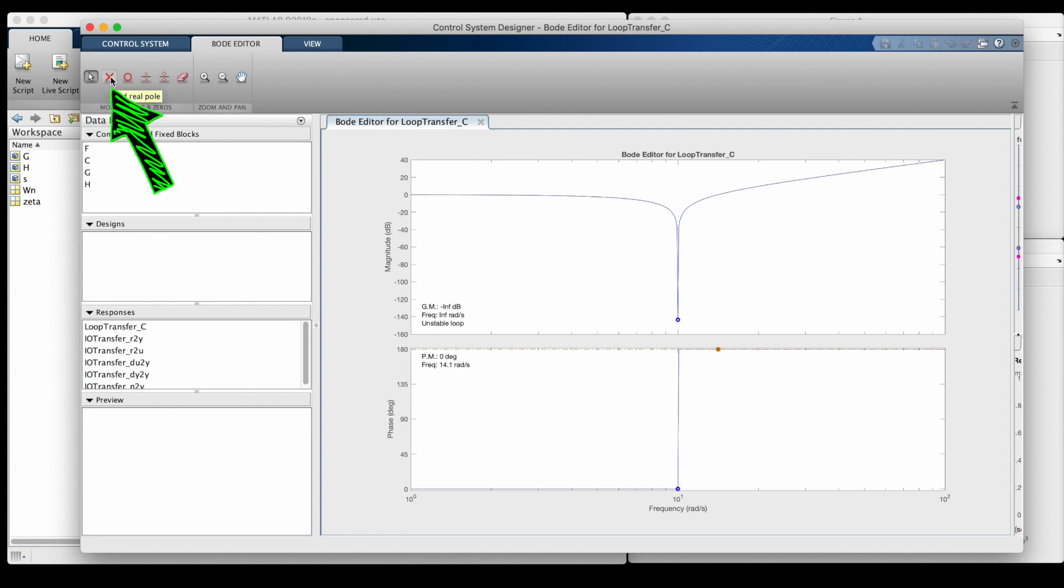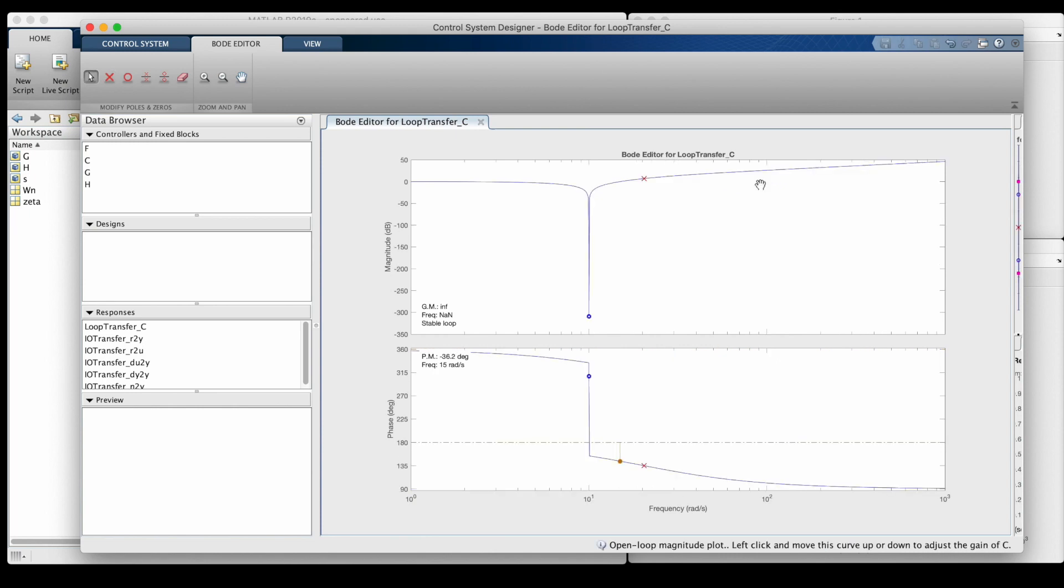I'm going to add my first pole just randomly in this high frequency area. And you can see that it bent this part of the gain plot, the frequencies higher than where I placed the pole, it bent it down that additional 20 dB per decade. This is because we've accounted for one of the extra zeros.